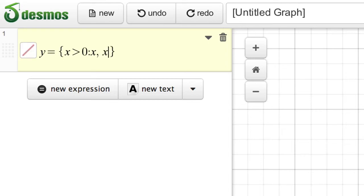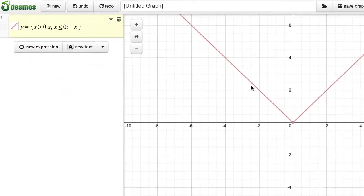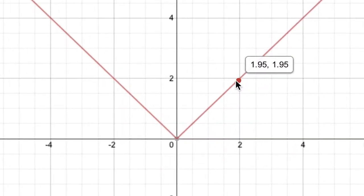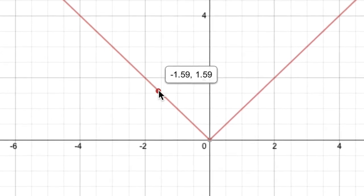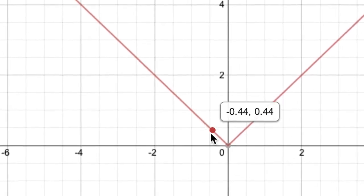Just add the second condition x less than or equal to zero colon negative x to complete the graph. This means that for each x value greater than zero, y equals x, and for x values less than or equal to zero, y equals negative x.